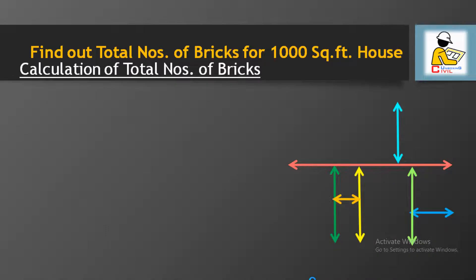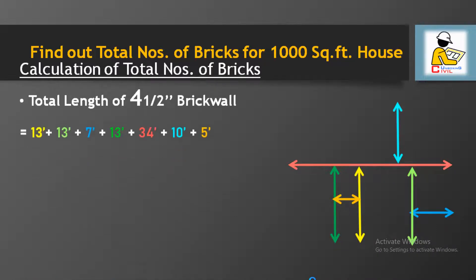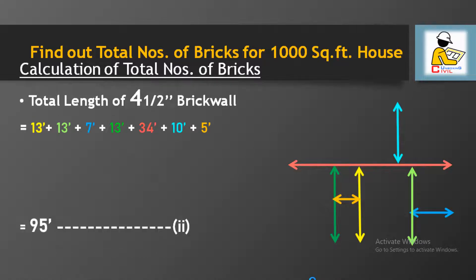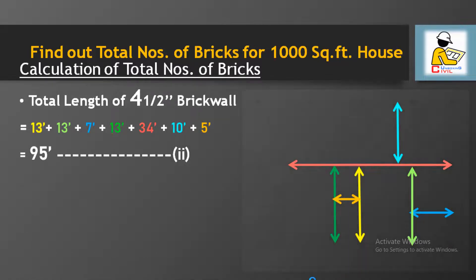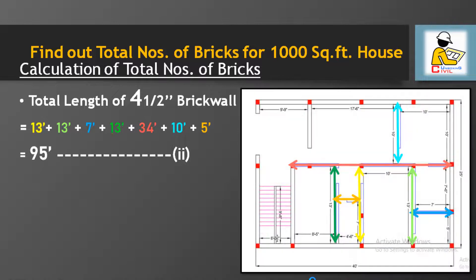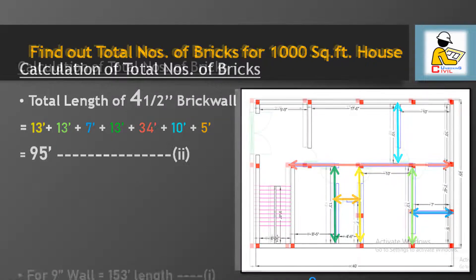Now we can see some colored lines shown as notations for the 4.5 inch brick wall. Adding all the inner walls of 4.5 inch thickness: yellow color dimension of 13 feet, light green color dimension of 13 feet, red color dimension of 34 feet, and so on. After adding all dimensions of the 4.5 inch wall, we get a total length of 95 feet.